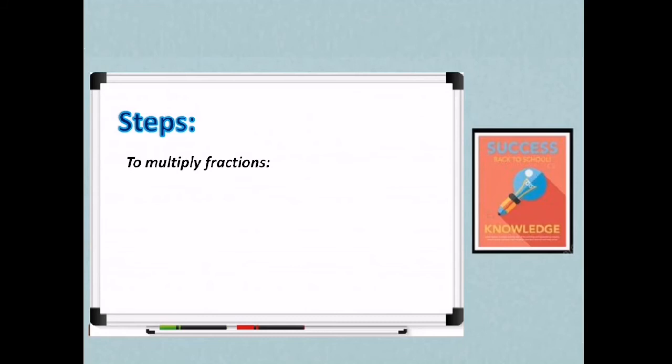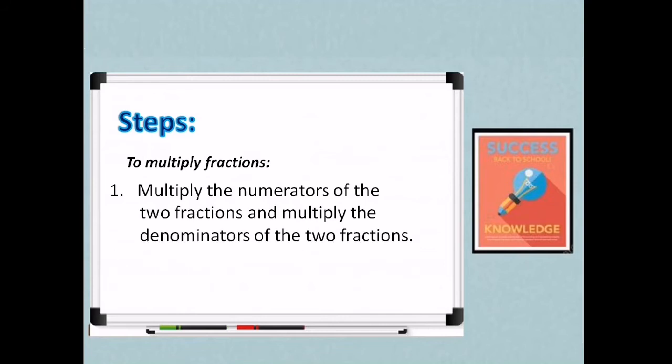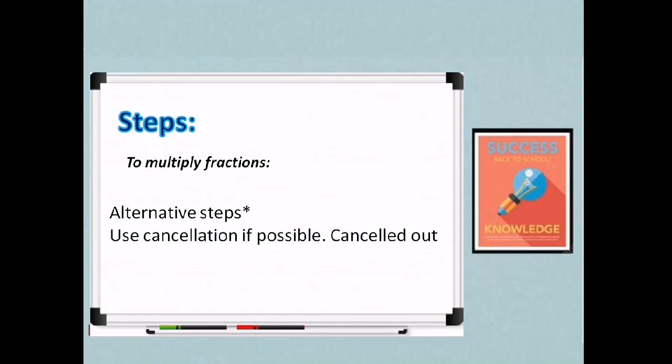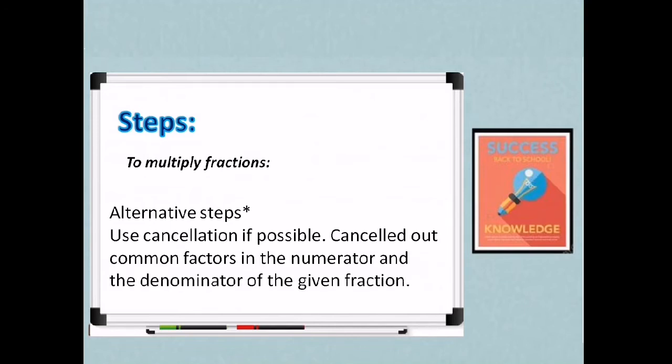So here are the steps in multiplying fractions. First, multiply the numerators of the two fractions and multiply the denominators of the two fractions. Or simply, numerator times numerator and denominator times denominator. Two, express your answer in lowest term if possible. So we also have alternative steps. Use cancellation if possible. Cancel out common factors in the numerator and the denominator of the given fraction. We can make use of cancellation to simplify multiplying fractions or express the fraction in lowest term before we multiply.